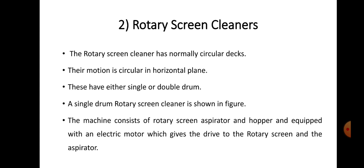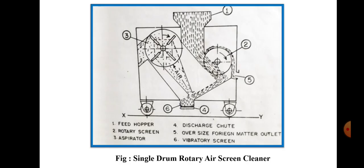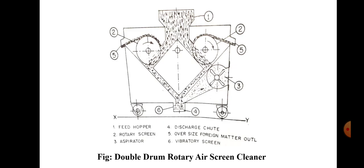The next type is the Rotary Air Screen Cleaner. The rotary screen cleaner has normally circular decks — in a vibratory air screen cleaner there is a rectangular deck, but in rotary screen cleaners the deck is normally circular, as the shape of the screen is cylinder type. The motion of these screens is circular in the horizontal plane, whereas in vibratory air screen cleaners the motion is horizontal oscillating and slightly vertical. These rotary air screen cleaners have either a single or double drum, as shown in the figure.